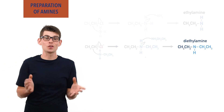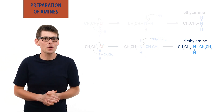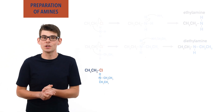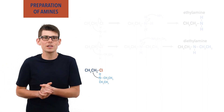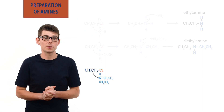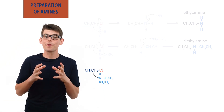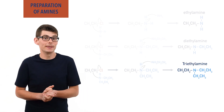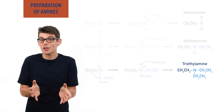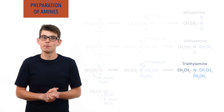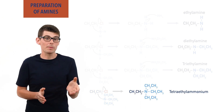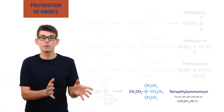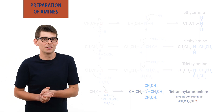It doesn't have to stop there. If there are still leftover chloroethane molecules, the nitrogen in diethylamine can again use its lone pair of electrons to attack the partially positive carbon in another chloroethane molecule. As a result it ends up with three ethyl groups bonded to it, making triethylamine, a tertiary amine. Triethylamine can then further react with another chloroethane molecule and form a tetraethylammonium ion with a positive charge, forming a salt with the negatively charged chloride ions.